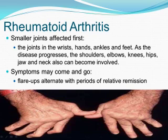Symptoms may come and go. Rheumatoid arthritis signs and symptoms may vary in severity and may even come and go. Periods of increased disease activity called flare-ups alternate with periods of relative remission, during which the swelling, pain, difficulty sleeping, and weakness fade or disappear.